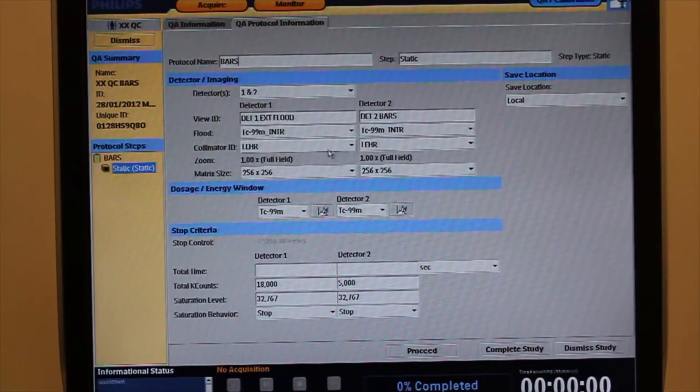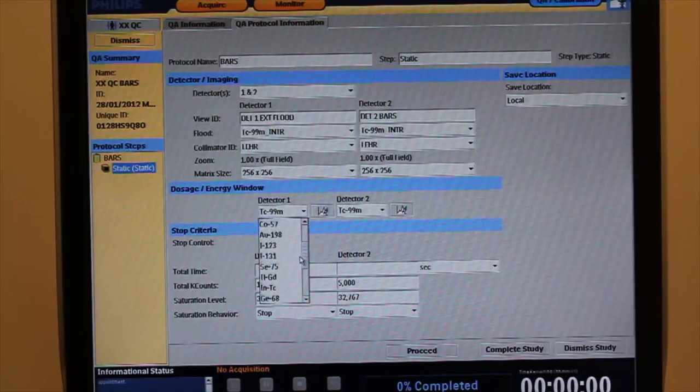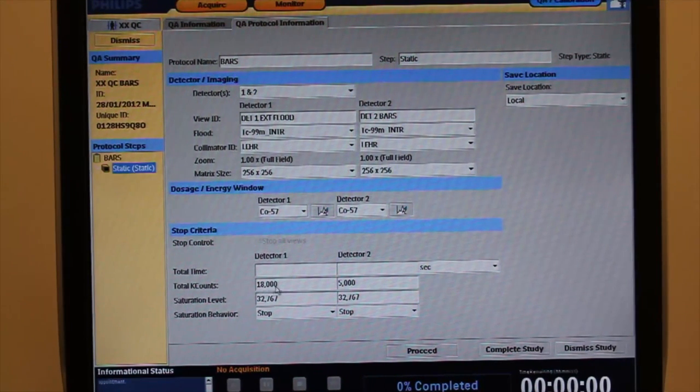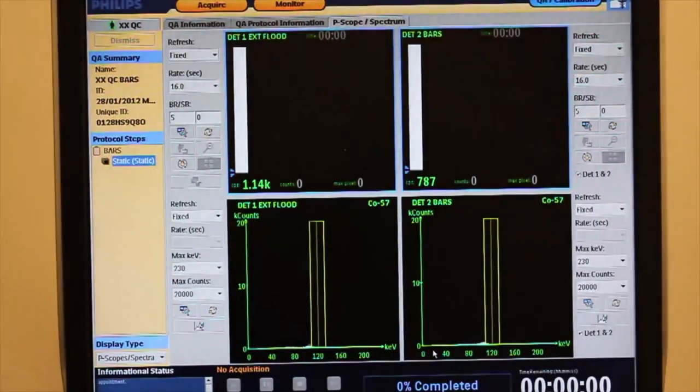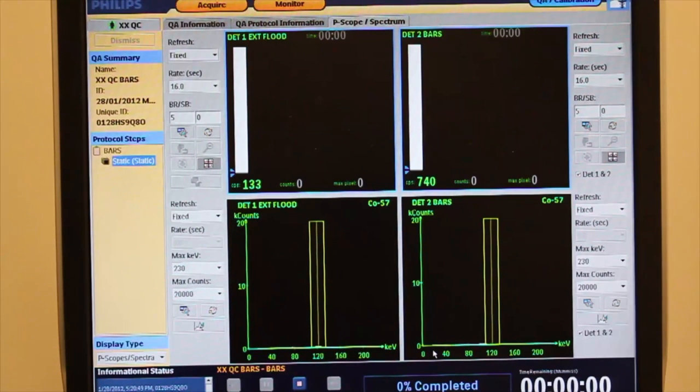Confirm the appropriate settings. Here we have detector one set up as an extrinsic flood since it does not have a bar phantom placed against it. Detector two is set up for the bars acquisition. We see a difference in counts: extrinsic flood is set up for 18 million and the bars acquisition is set up for 5 million counts. We selected Cobalt 57 as the isotope here since we are using the cobalt sheet source. Select technetium if you are using the fillable phantom sheet source.